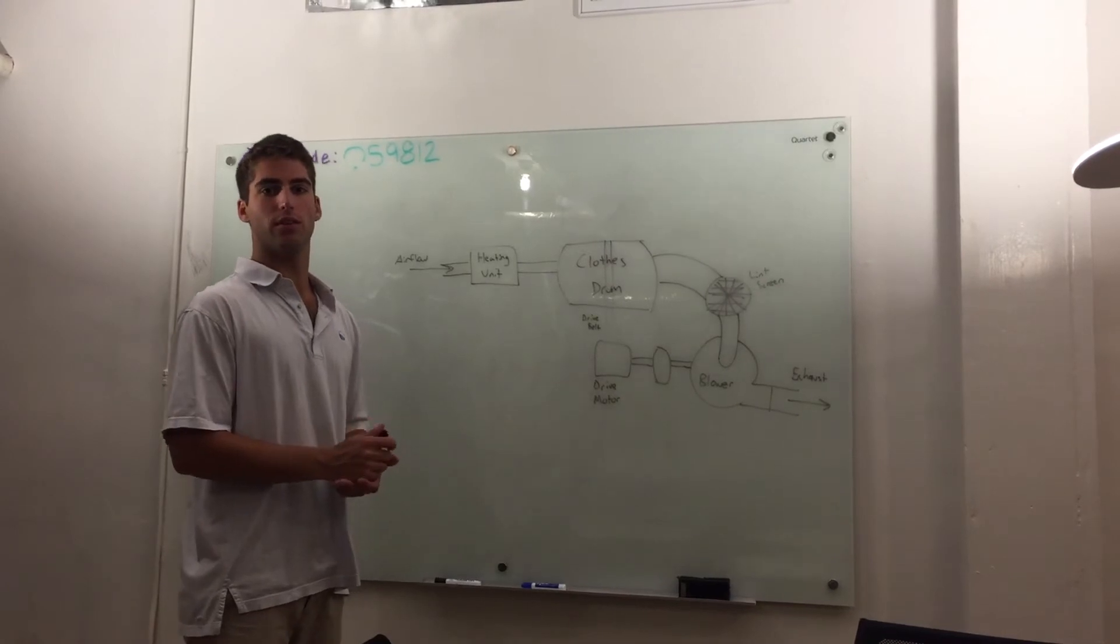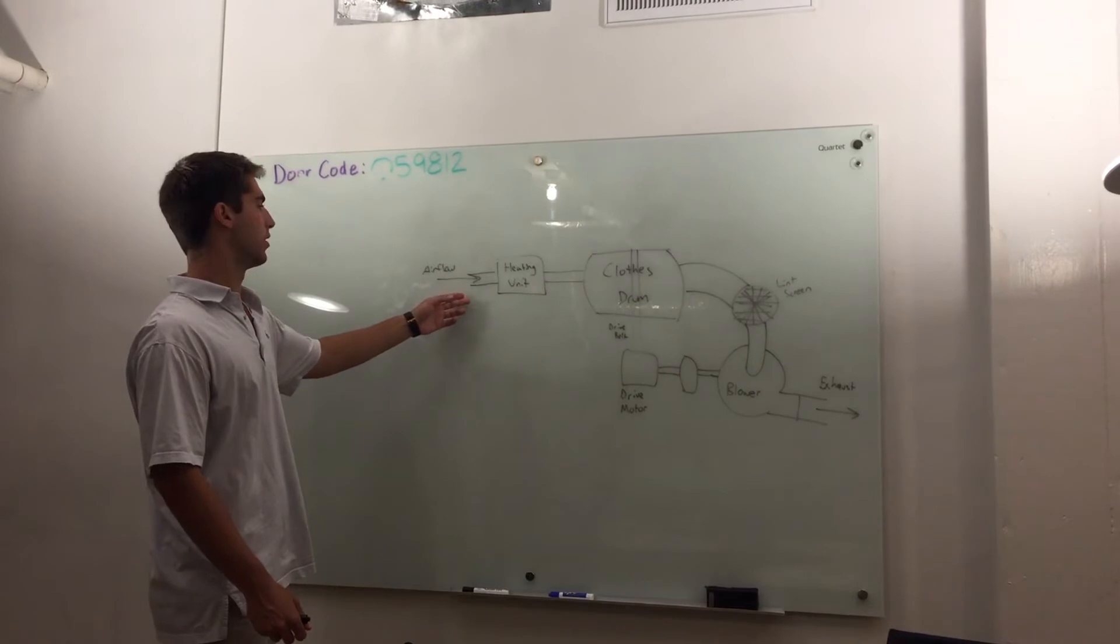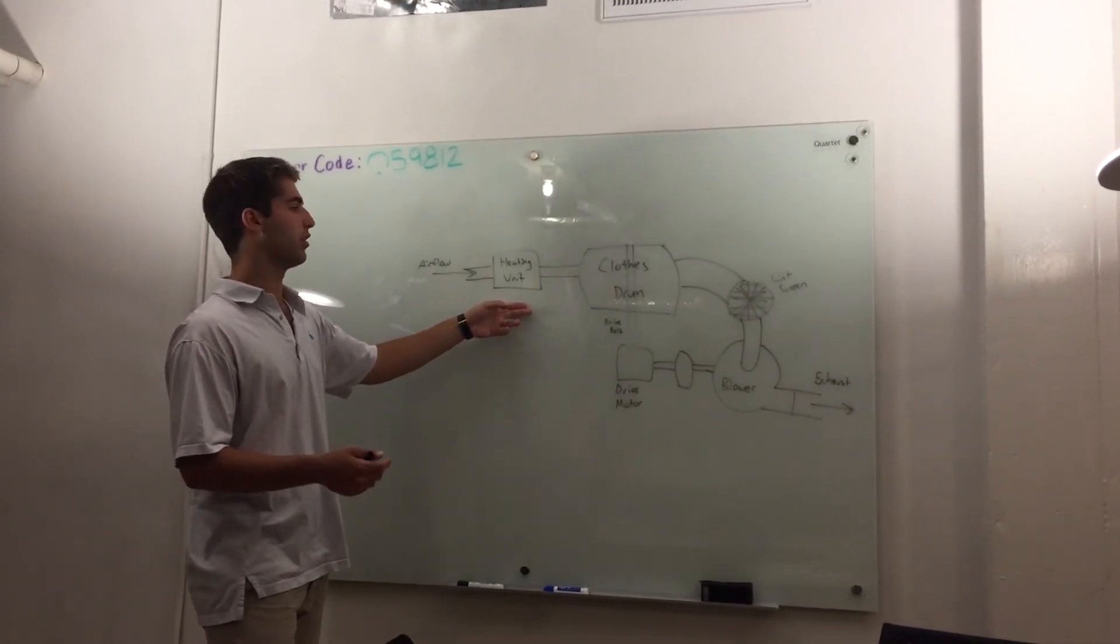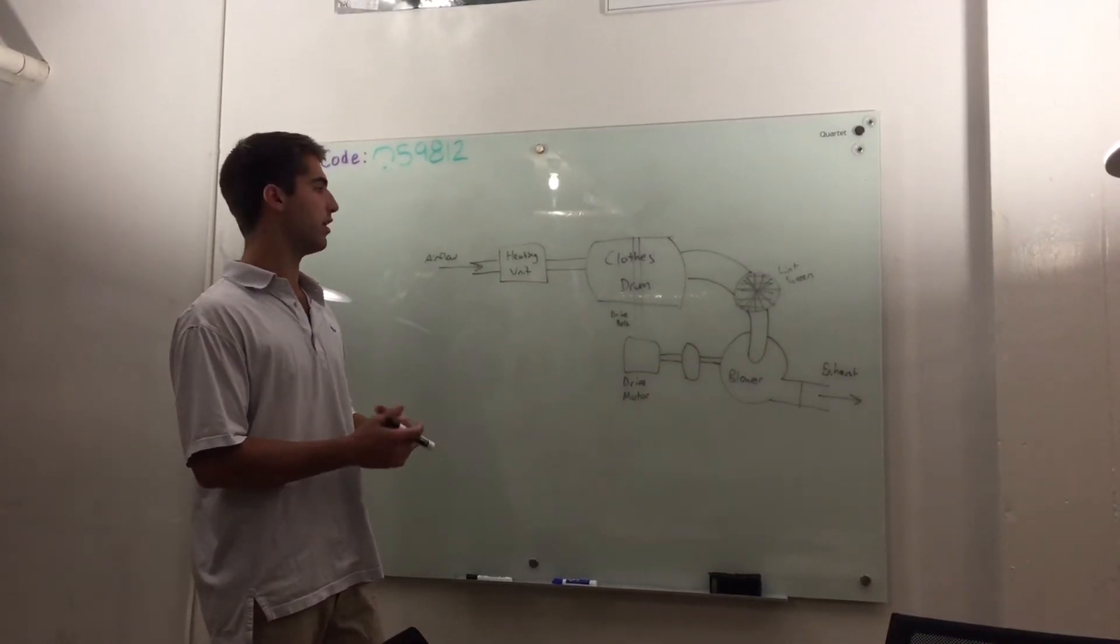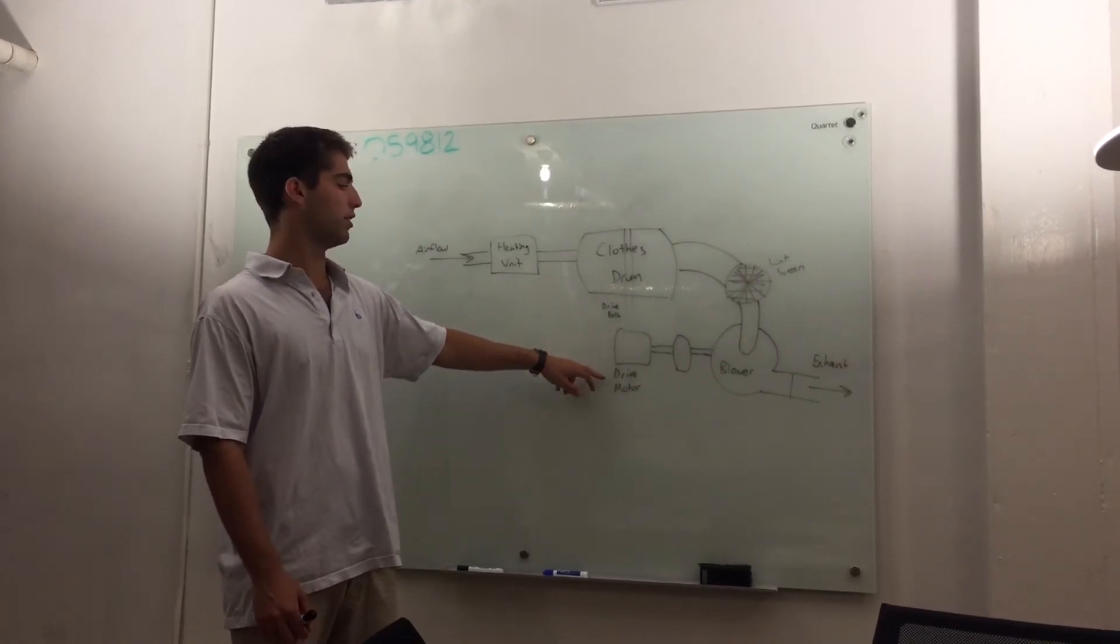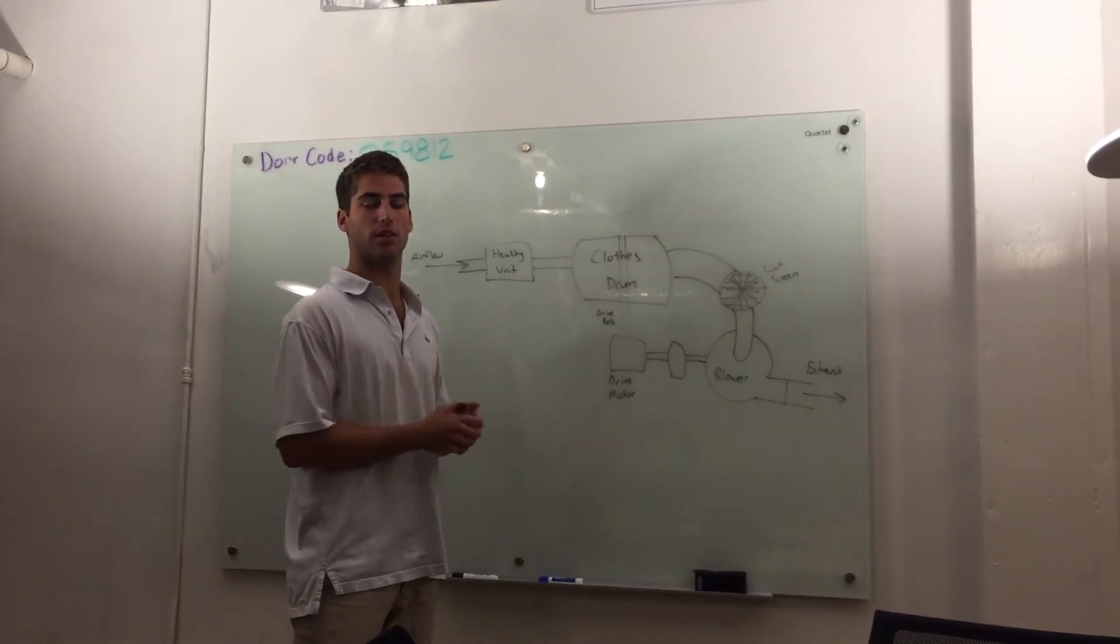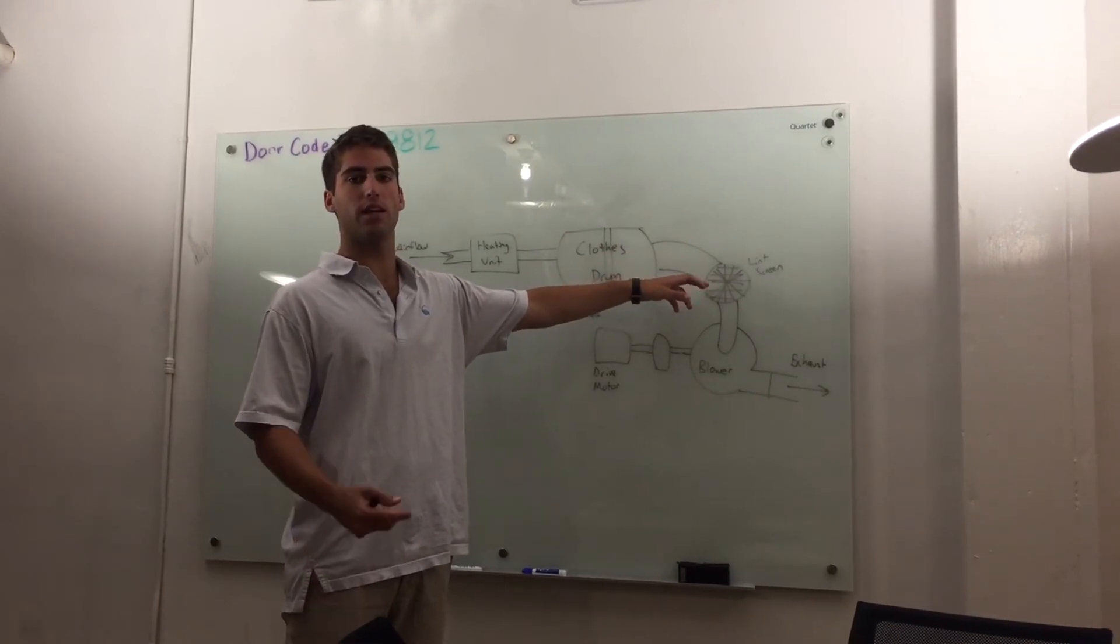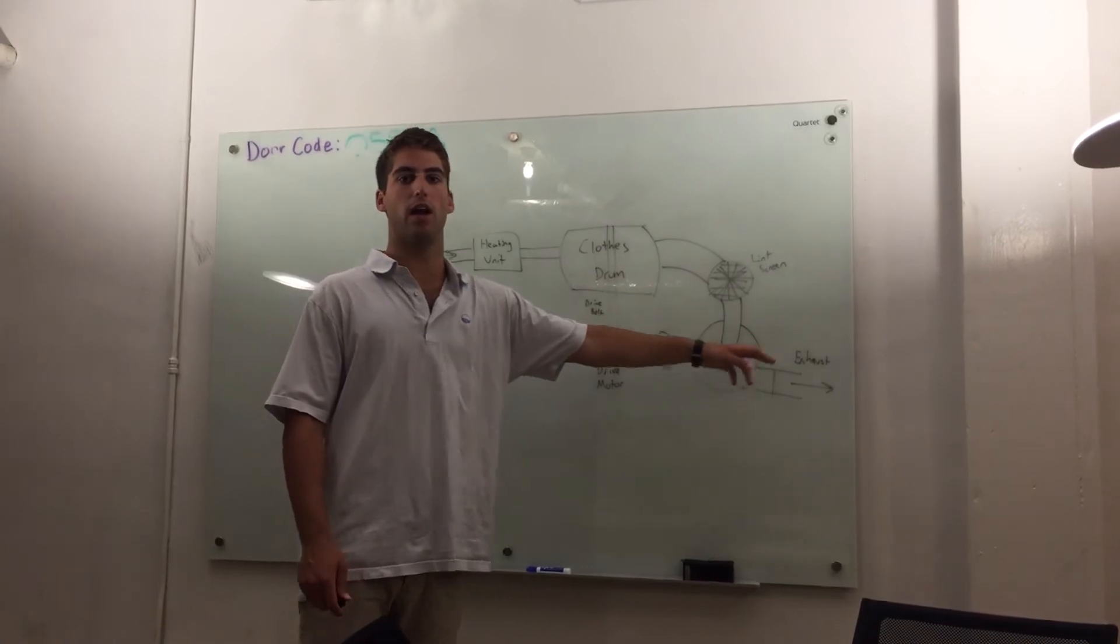So now let me walk you through the common setup of a typical dryer. The air is then taken into the system into the heating unit which creates the hot air for the clothes. That heating unit then filters into the clothes drum where all the clothes sit. In order to spin that drum there's a drive belt connected to a drive motor. This provides the motion to spin the clothes and rotate them so that they can be dry. The air from the clothes drum goes into the lint screen to capture any excess lint before going to the blower and coming out as exhaust.